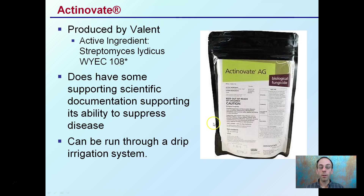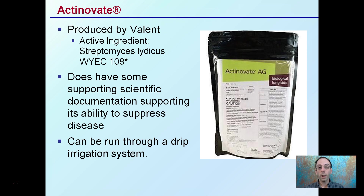Lastly, we have Actinovate, made by Valiant. It contains Streptomyces, a particular microbe, and does have supporting scientific documentation for its ability to suppress disease. It can be run through drip irrigation systems, which is an advantage of this particular product. All of these can be very expensive, so you have to be mindful of where they're being used. These are some very common probiotics that should potentially be considered if you're having a problem and want to approach it in a biological way.